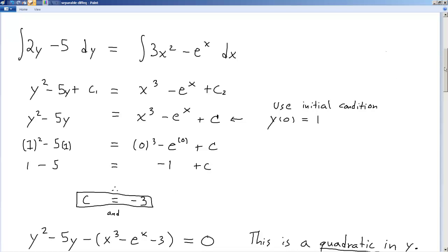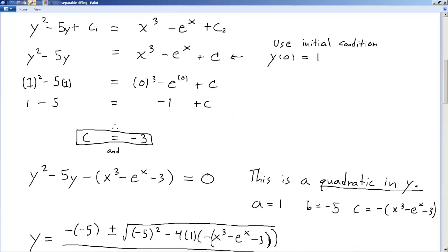And what I end up having, because remember, the ultimate goal is to get y equals f of x, is this expression: y squared minus 5y minus the quantity x cubed minus e to the x minus 3 equals 0. This thing right here is a quadratic equation in y, where a is equal to 1, b is equal to negative 5, and c is equal to this entire thing right there. That's what c is equal to. That's a. Just 1 times that.